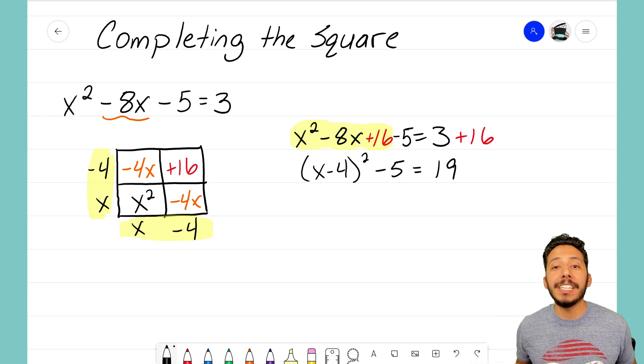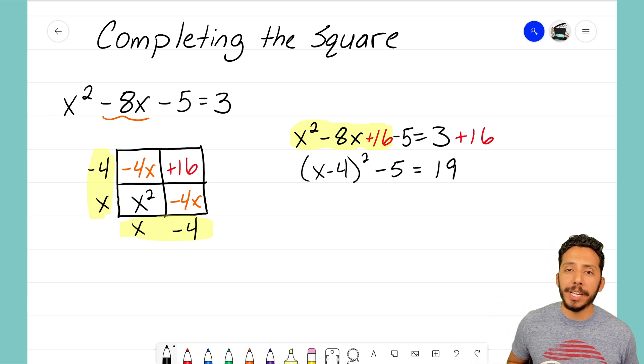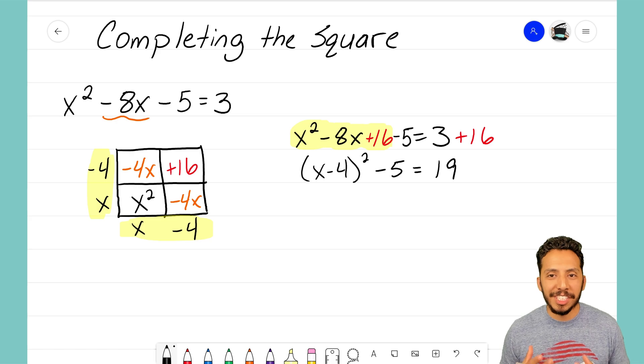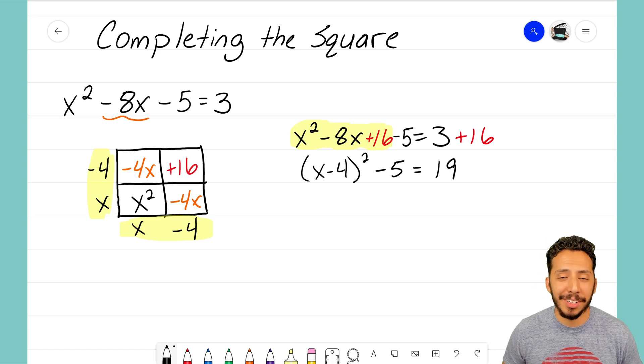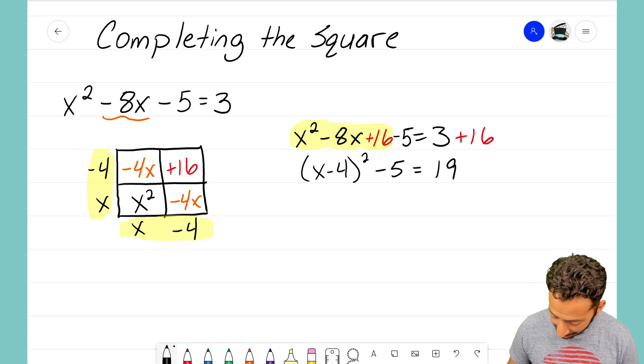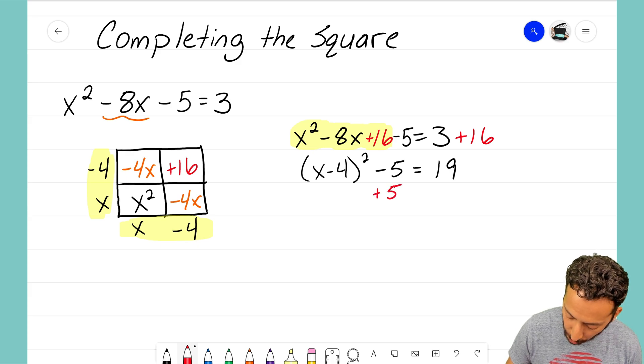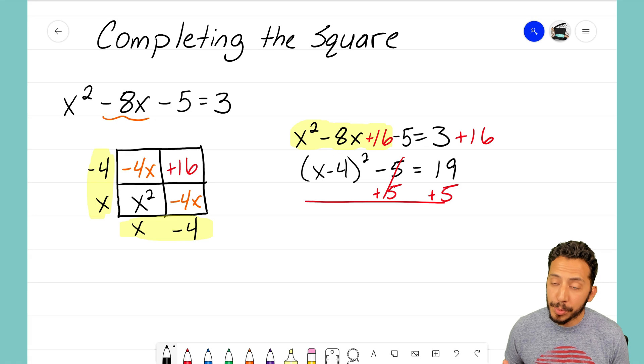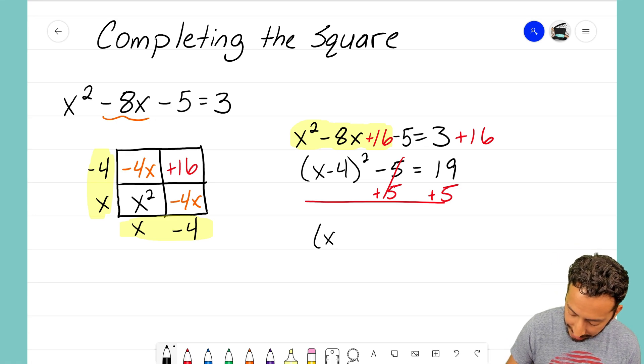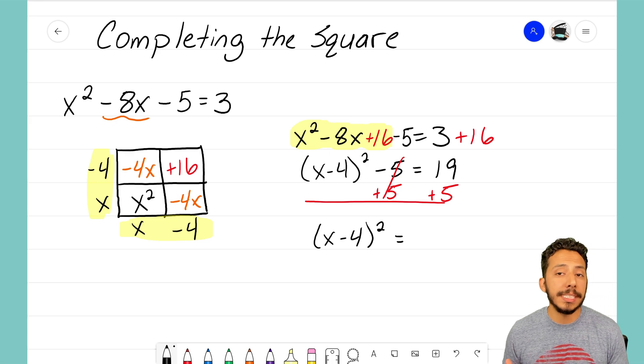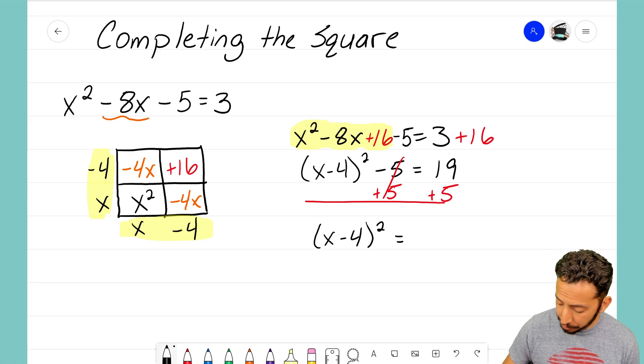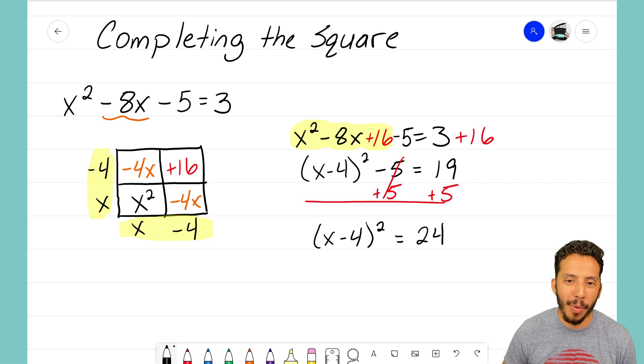At this point we have completed the square, we're left with this equation that we can solve to determine what our x intercepts are. So let's go ahead and do that. I'm going to need to first add this 5 over to the right side. By doing that I'm leaving my x variable all by itself here on the left side, x minus 4 the quantity squared and it equals 19 plus 5. And 19 plus 5 is 24.